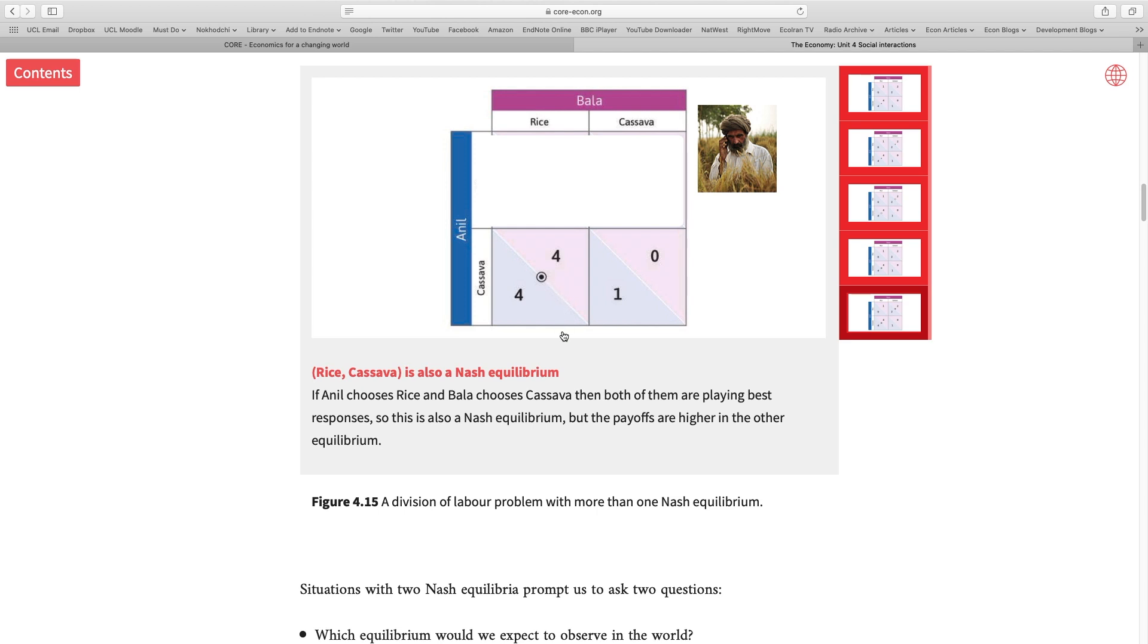Now what if Anil decides to produce rice? What would be my best strategy? If I produce cassava I'll get two, rice I'll get one, so cassava is my best strategy and then I'll put a circle around that strategy to represent my best response, Bala's response.